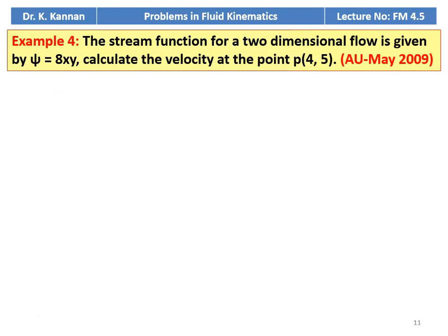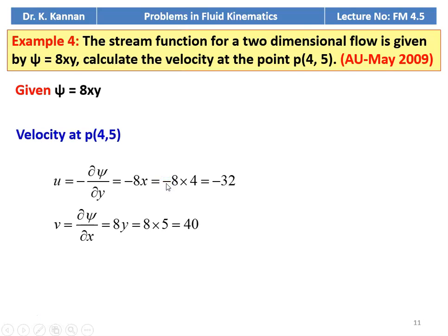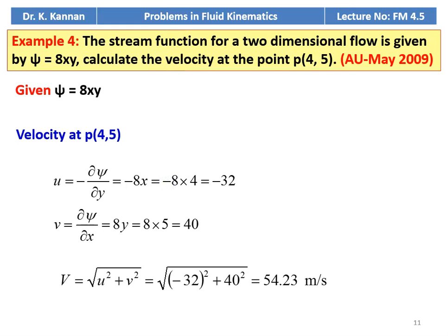Example number 4. The stream function for a two-dimensional flow is given by psi equal to 8xy. Calculate the velocity at the point (4, 5). This is from May 2009 question paper. Psi equal to 8xy. Velocity component u equal to minus of dou psi by dou y, which is minus 8x equal to minus 8 into 4 equal to minus 32. Velocity component v equal to dou psi by dou x, which is 8y, so 8 into 5 equal to 40. The velocity v equal to square root of u squared plus v squared, which is square root of minus 32 squared plus 40 squared equal to 54.23 meters per second.